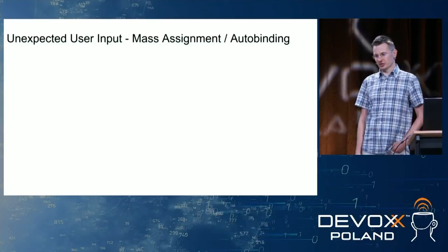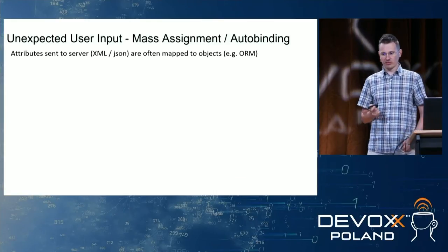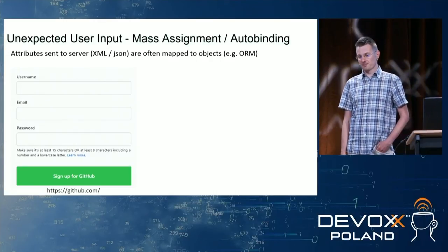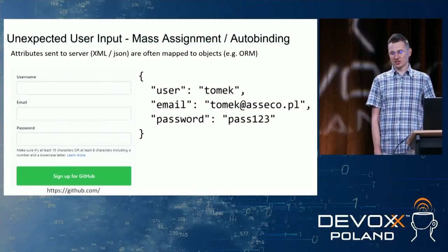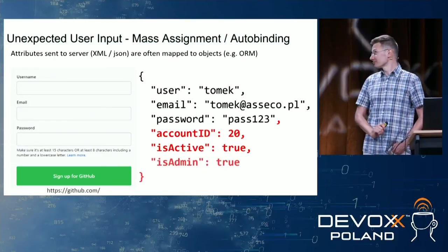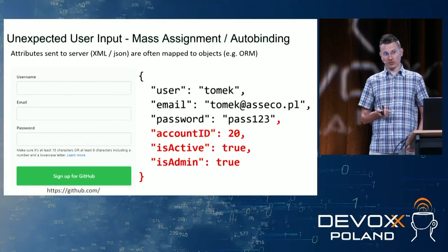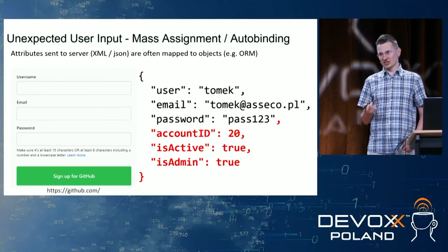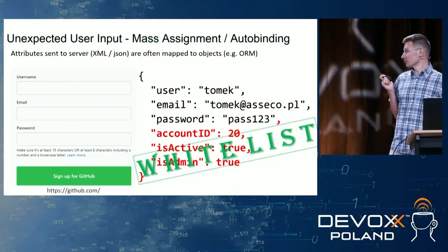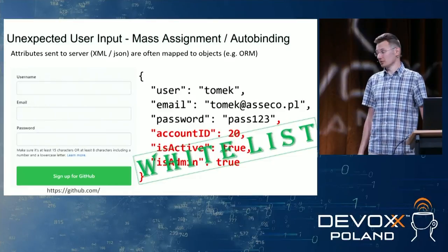Speaking of user inputs, it's also worth mentioning mass assignment or auto-binding. Attributes sent to the server via XML or JSON are often mapped to an object. Here we have an old GitHub registration form that used to be publicly available. You can imagine these three fields are mapped to a JSON object, but what if an attacker extends that JSON and adds an account ID, activates the user, and makes them an admin? GitHub actually had this problem — with a publicly available form you could add a new user, assign it to an existing ID, and gain admin access including private repos. As developers, we need to whitelist input and only allow the expected fields in such a request.